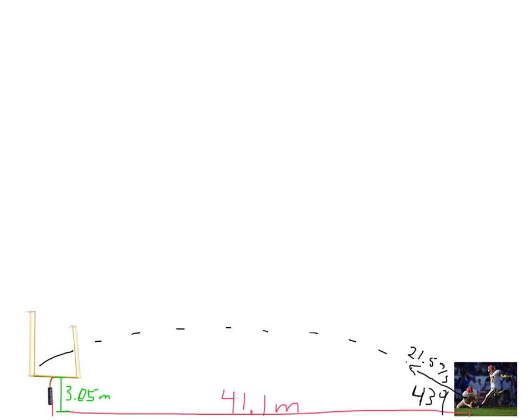So we're going to kick the football with an angle of 43 degrees here, 43 degrees at 21.5 meters per second. And the question is, do the dogs make the field goal and win the game or do they miss the field goal and Mr. Birch has to cry in his hands because the dogs lost to the Gators again? And that's never a good thing.